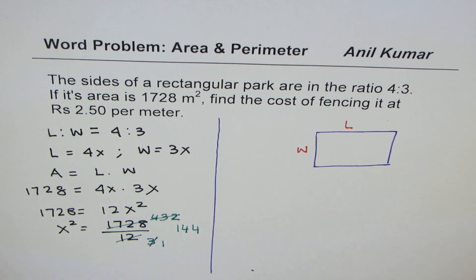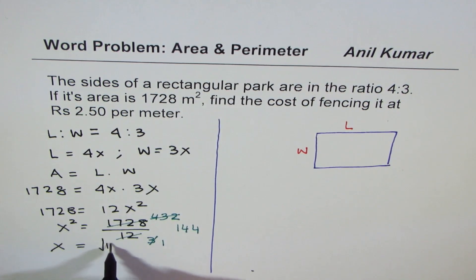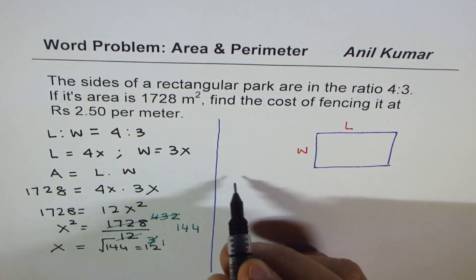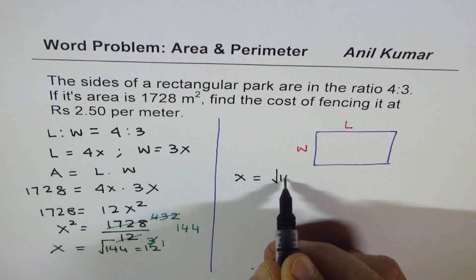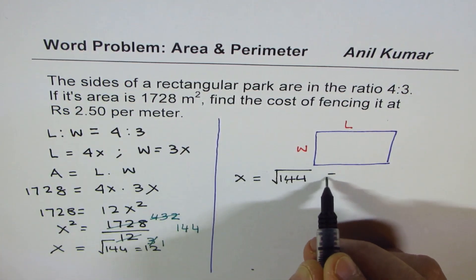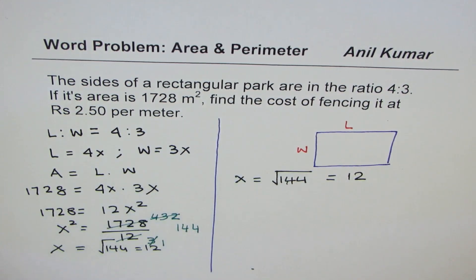So what we get here is x squared is 144, and therefore x is equal to square root of 144, which is 12. You know, 12 times 12 is 144. So that gives us the value of x as 12. We are only going to take the positive value.